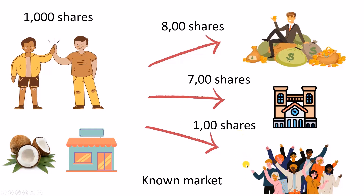Generally, the high net worth individuals and financial institutions get the shares. And very rarely, retail investors — people like you and me — get shares allotted to them in an IPO.